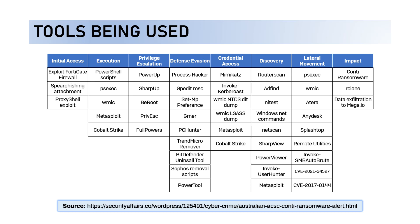Conti also uses Metasploit and Cobalt Strike, as well as tools like PowerUp and SharpUp for privilege escalation, and FullPowers. Some of the tools are very common and popular, such as GPEdit and Mimikatz.